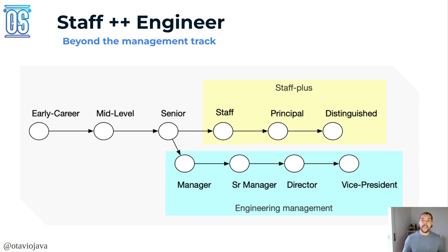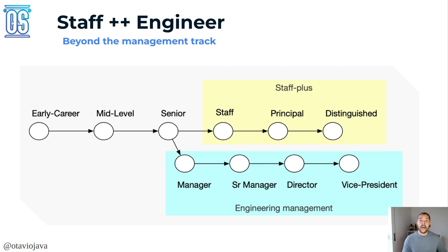It's important to highlight that IT does not provide any kind of regulation. Because of that, each company might have its own definition of these layers. Staff is one position, there may also be a senior staff, and there is the fellow engineer who can go beyond distinguished. But usually, when you talk about staff plus, it's a professional engineer that goes beyond senior.